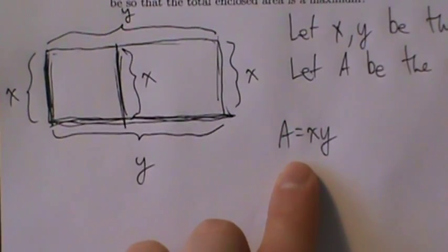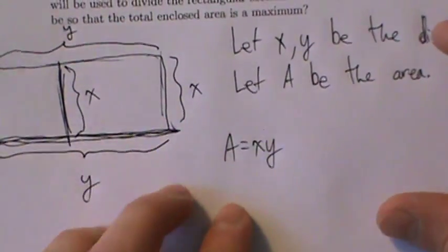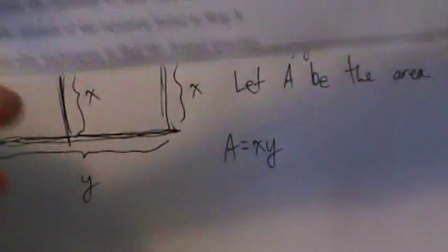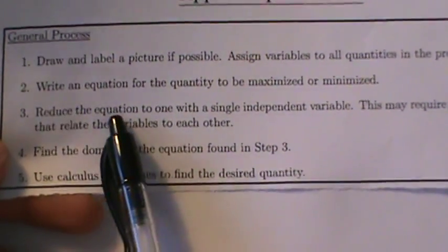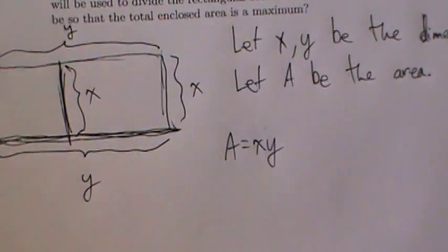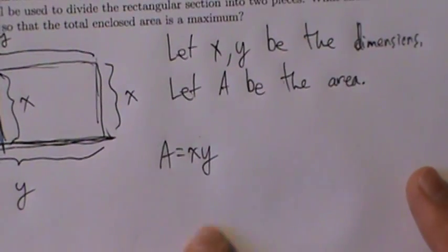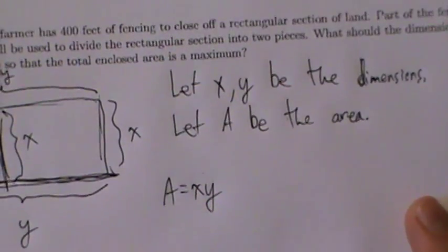This is what we want to maximize — find x and y that give the maximum possible value of A. But we can't do that yet because A is expressed in terms of two variables, x and y. So we have to go to step three: reduce the equation to one with a single independent variable. This may require secondary equations that relate the variables to each other. We ask ourselves: is there any other information we can use to relate x and y?